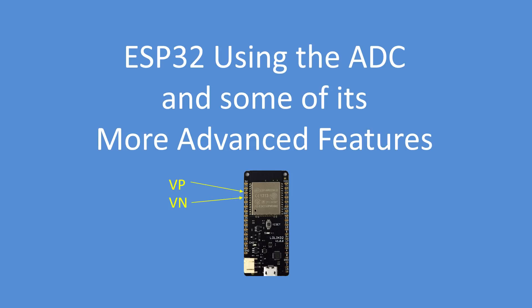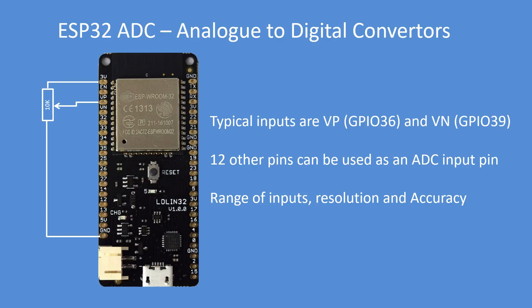Those are the two main inputs you'll find on most development boards, VP and VN, GPIO36 and 39 respectively. So typical inputs are VP, GPIO36 shown there on the board, the Lolin board, and VN, GPIO39.